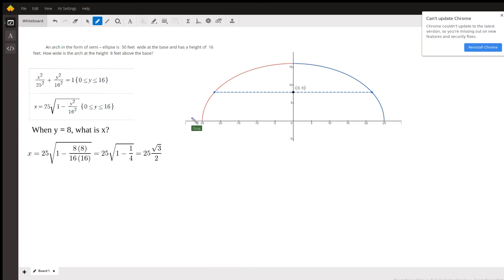We're told that the base has a length of 50, which means this is 25 from here out to one of the major vertices. And this distance, the height from 0 up to here is 16.